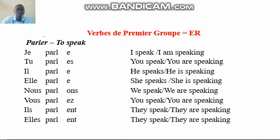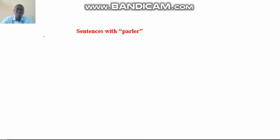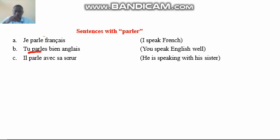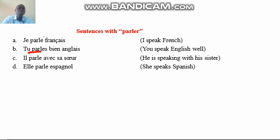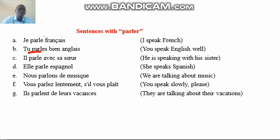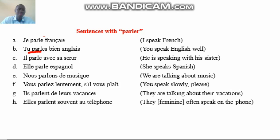Now, having established how to conjugate ER verbs, let's look at 'parler' in sentences. 'Je parle français' — I speak French. 'Tu parles bien anglais' — you speak English well. 'Alexis parle avec sa sœur' — he is speaking with his sister. 'Elle parle espagnol' — she speaks Spanish. 'Nous parlons de musique' — we are speaking about music. 'Vous parlez lentement, s'il vous plaît' — you speak slowly, please. 'Elles parlent de leurs vacances' — they are talking about their vacation.